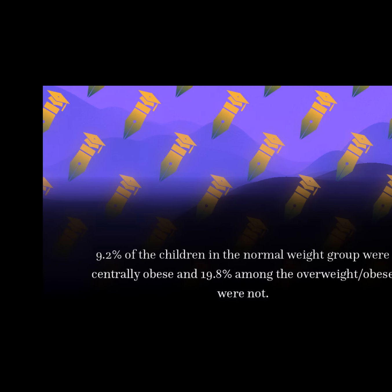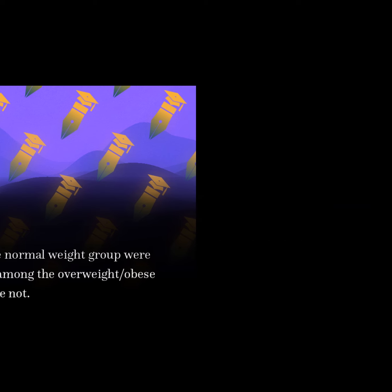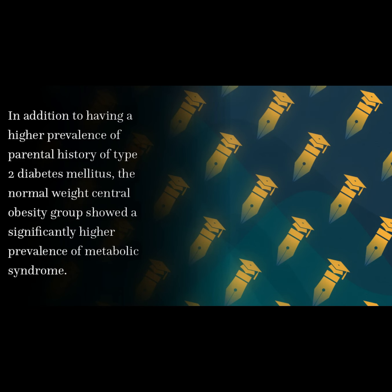9.2% of the children in the normal weight group were centrally obese, and 19.8% among the overweight obese were not. In addition to having a higher prevalence of parental history of type 2 diabetes mellitus, the normal weight central obesity group showed a significantly higher prevalence of metabolic syndrome.